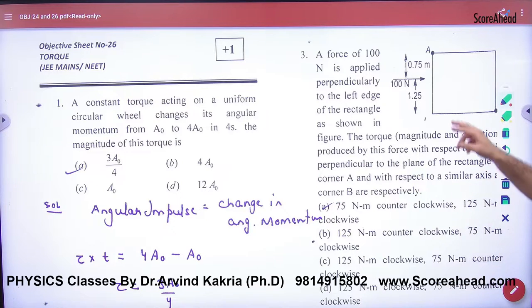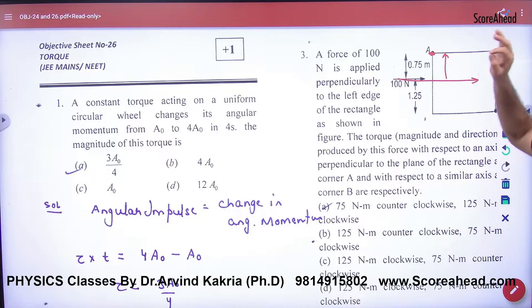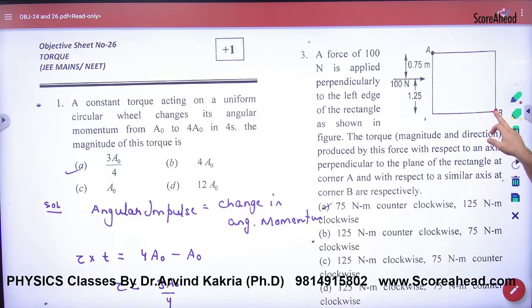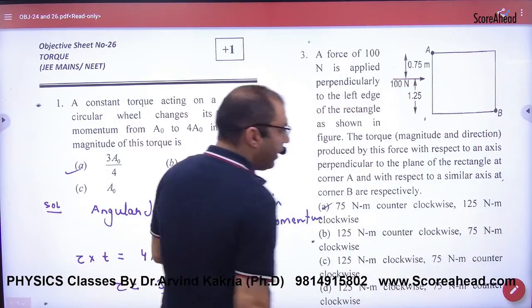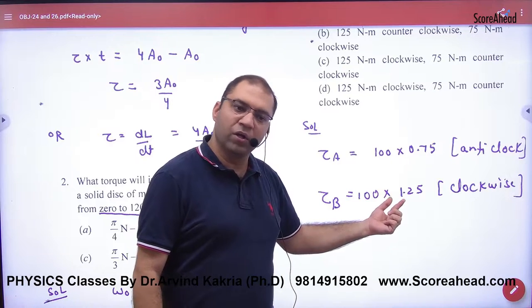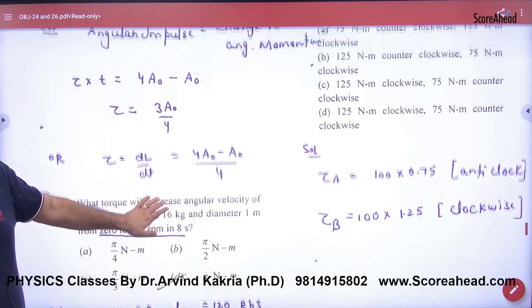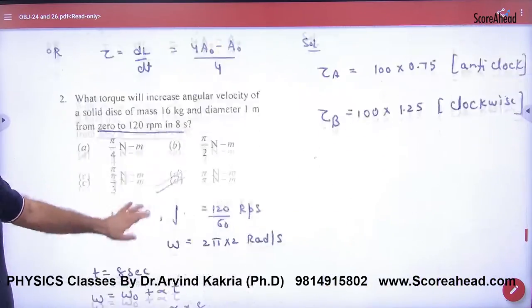When the axis is A, force into perpendicular distance from the axis, 75. So if I put a nail, hinge it, and apply force like this, the whole frame will rotate anti-clockwise. But if I take axis B, then torque will be force into perpendicular distance 1.25, but it will rotate clockwise from here. So there are two torques here. First torque is anti-clockwise and second is clockwise. You have to mark from here. Clockwise, anti-clockwise? Counter clockwise, anti-clockwise are the same.